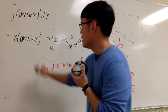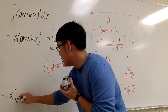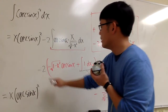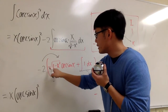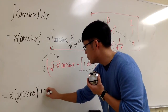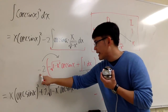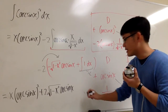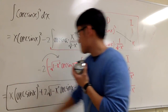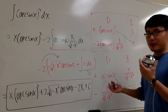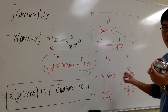Now with the negative 2 in front, let's distribute it inside to finish up. We have x times arcsin x squared, then negative 2 times negative square root of 1 minus x squared times arcsin x becomes positive 2 square root of 1 minus x squared times arcsin x, and negative 2 times x gives minus 2x. Plus C, and we are done.